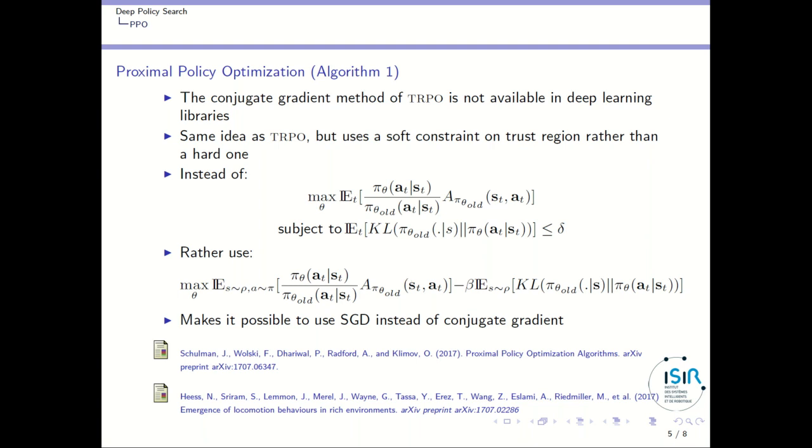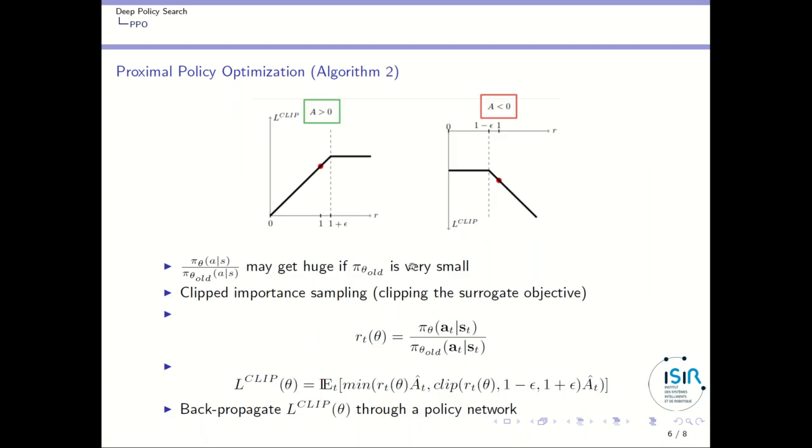So that's the first algorithm. The second algorithm is based on a different idea. The idea is that in TRPO, the importance sampling term, which is here, may get huge if P_theta_old is very small, which happens if your new policy is exploring states where the actions or actions in states where it has a very low probability. So in that case, what you can do is if the term here is huge, you can just clamp it. So you write R of theta is this importance sampling term.